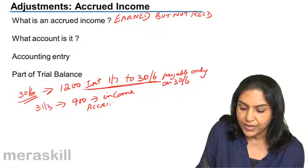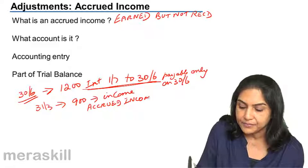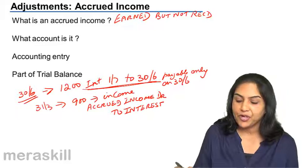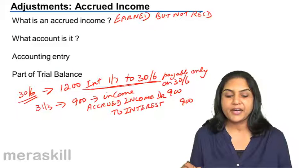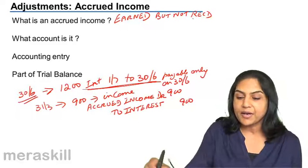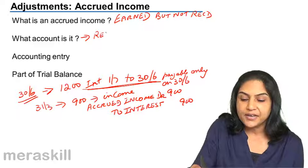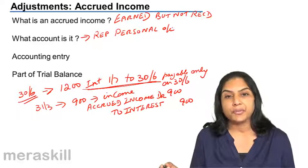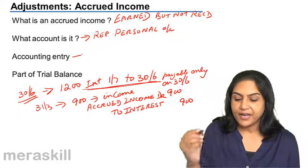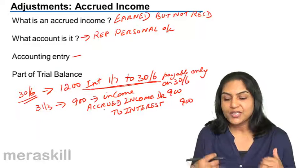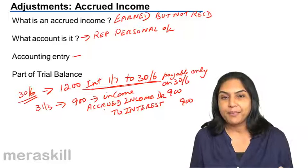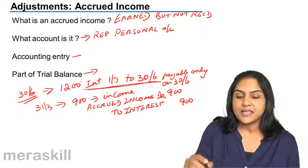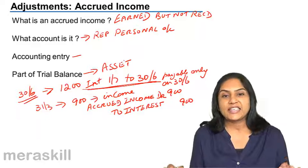The account involved is called accrued income — we have a receivable called accrued income. The accounting entry is: debit accrued income account, credit interest income account for 900 for the current year. The accrued income account is a representative personal account; in this example, it represents the account of the bank from whom interest is to be received. Since it is income, we increase income by crediting it and debit the receivable asset account. If accrued income already appears in the balance sheet, it is an asset taken to the asset side.